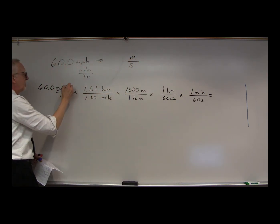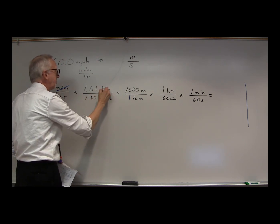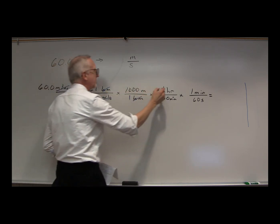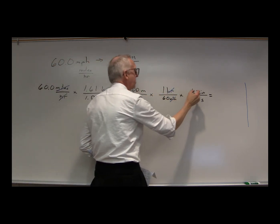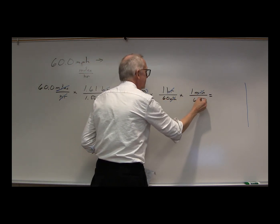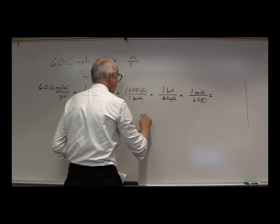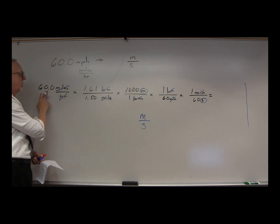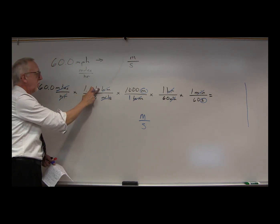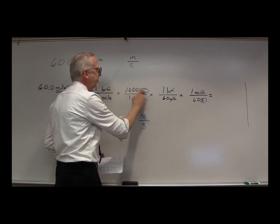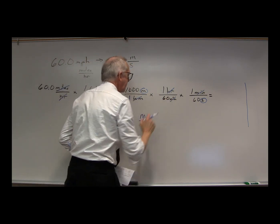Now we want to convert hours to seconds. We've got hours on the denominator, we have to put hours in the numerator to cancel it out. Hours to minutes: 1 hour, 60 minutes. Then we want to get rid of the minutes, so we put the minutes in the numerator of the conversion factor. 1 minute, 60 seconds. We've got miles on the top, miles on the bottom. Kilometers on the top, kilometers on the bottom. Hours on the bottom, hours on the top. Minutes on the bottom, minutes on the top.